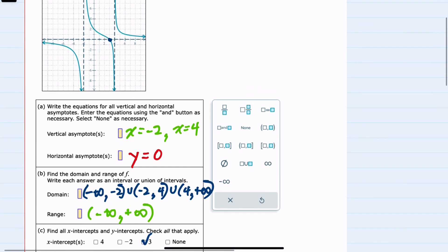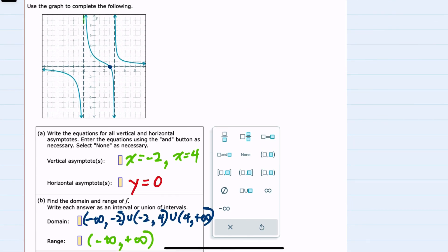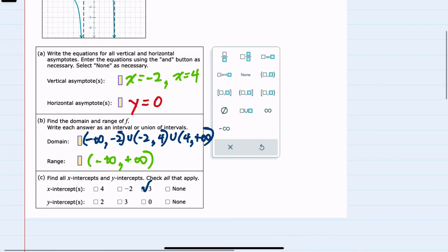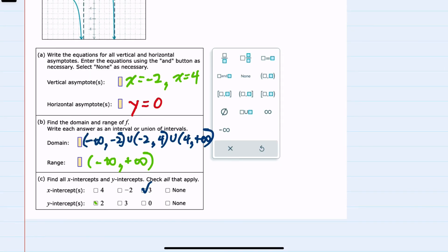For y intercepts looking at the y-axis, I can also see that it crosses the y-axis once right here where we have the value y equals 2, so our y-intercept is 2. One x-intercept and one y-intercept.